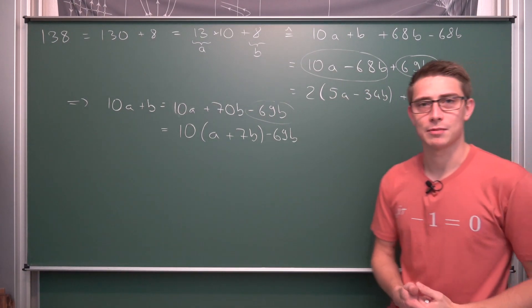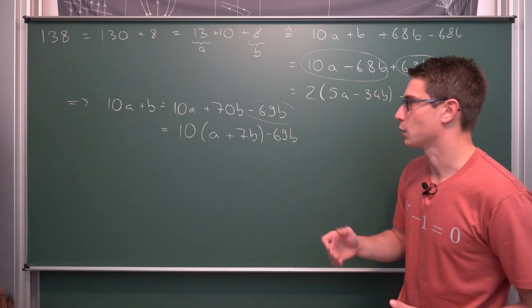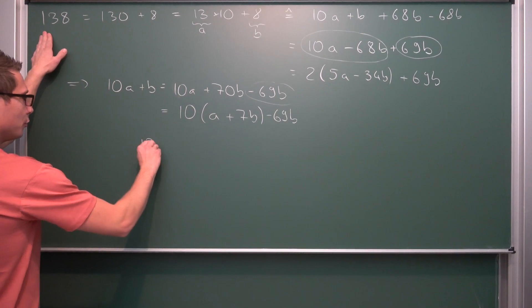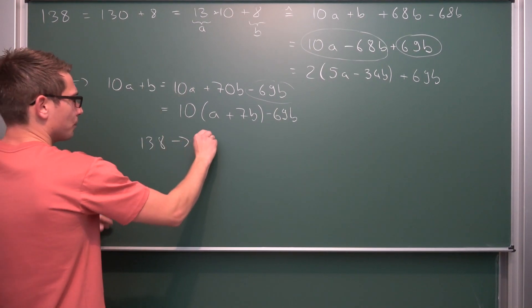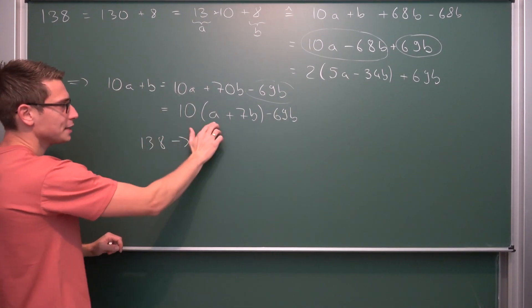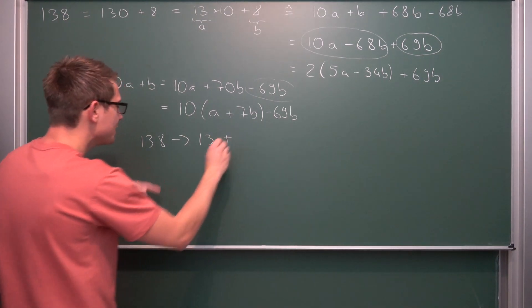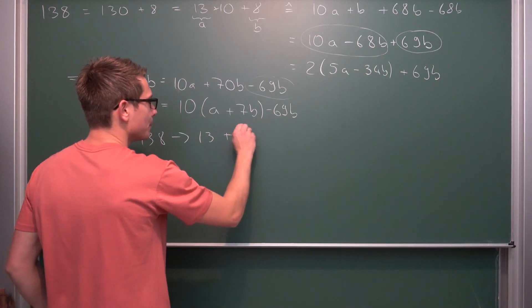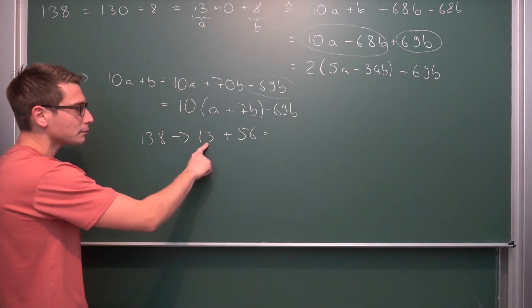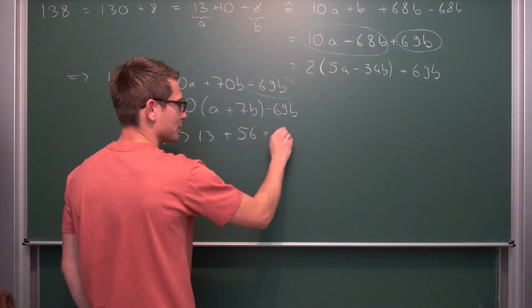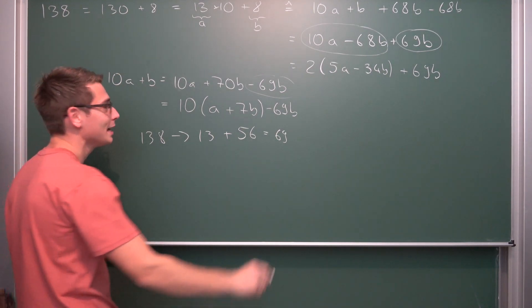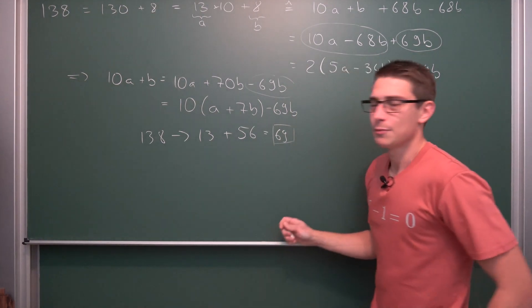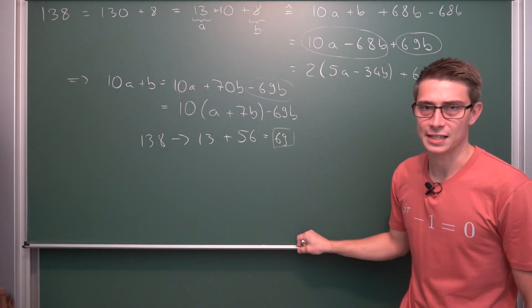So what's the algorithm to determine if a number is divisible by 69? You take the front part — so 138 turns into 13 — and then add 7 times the last digit to it. 7 times 8 gives us 56. 13 plus 56 gives us something very nice: 69, which is obviously divisible by 69. Hence we are done. And this algorithm is always going to work, which is pretty fantastic.